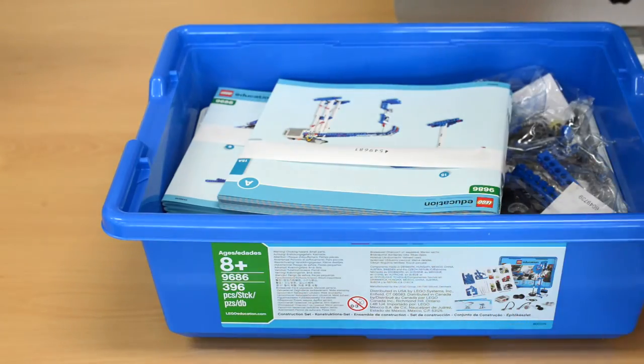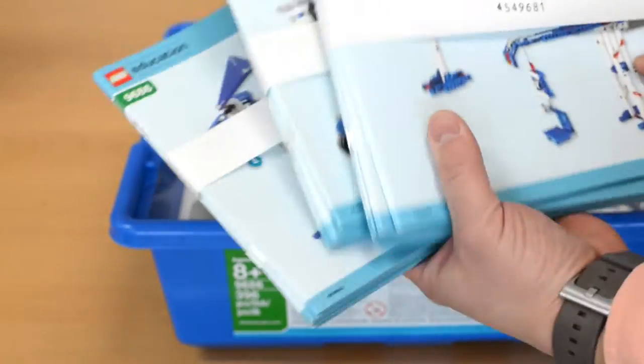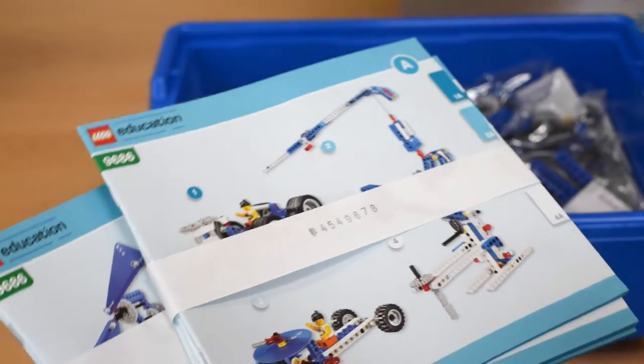You will first find full-color building instruction booklets for 10 principal models and 18 main models that will teach students how to build machines, such as a robotic dog, cars, and cranes.